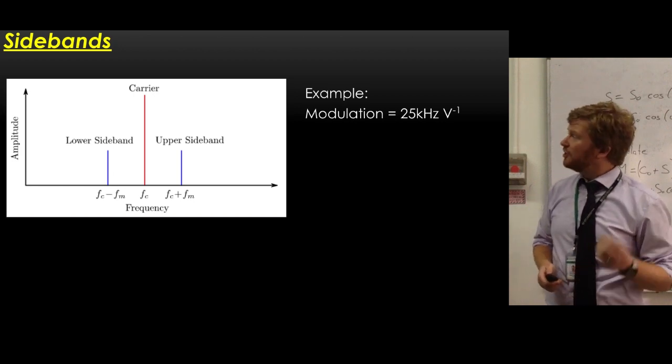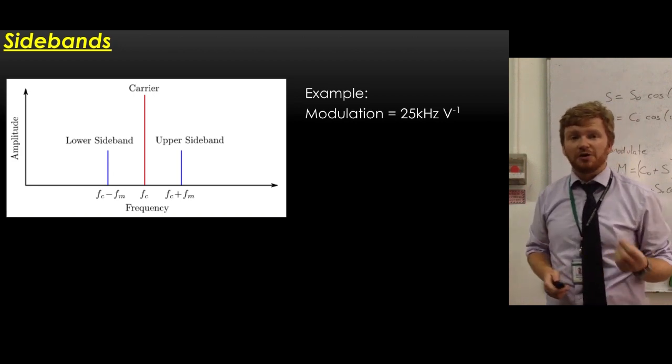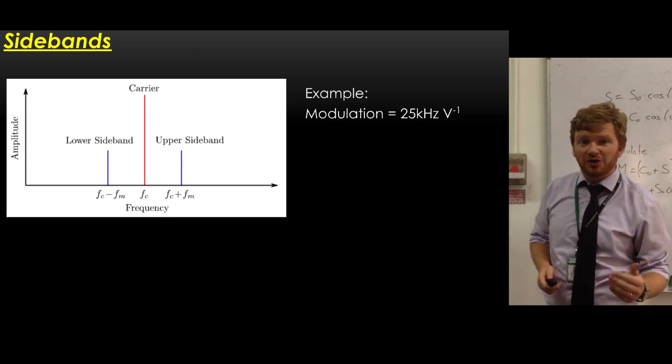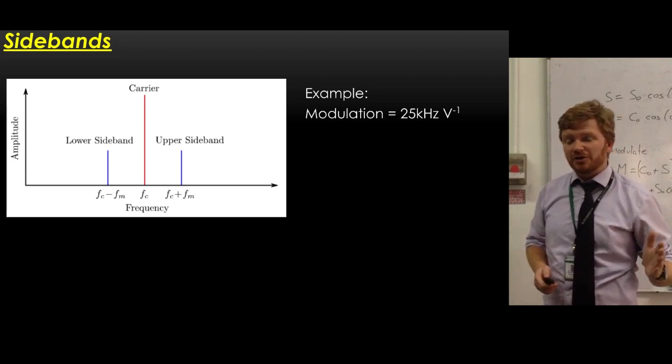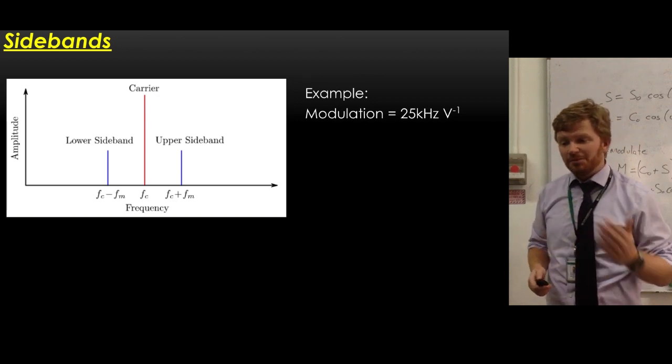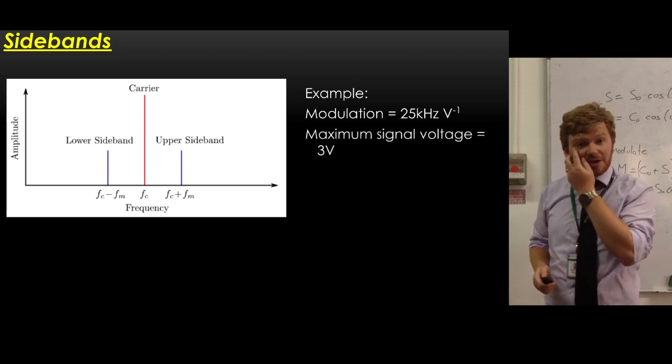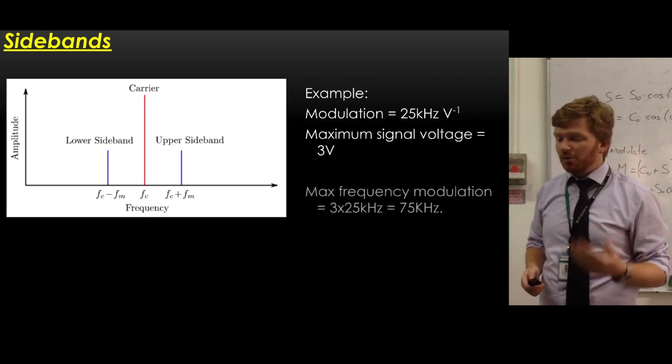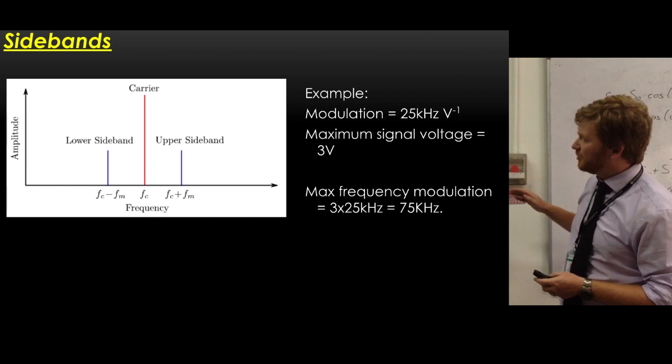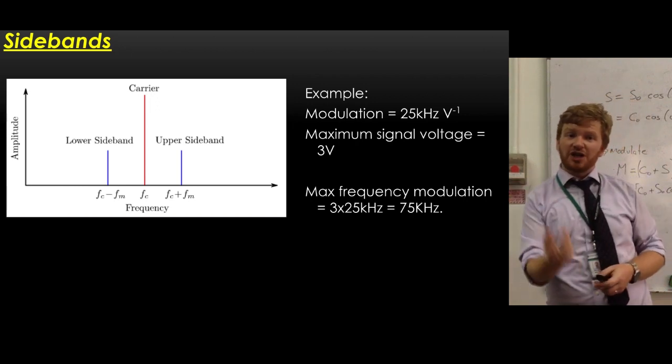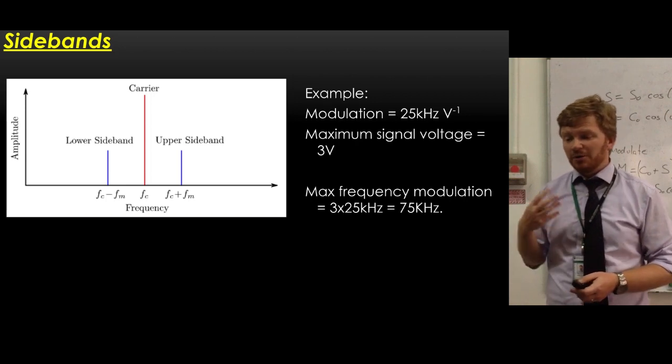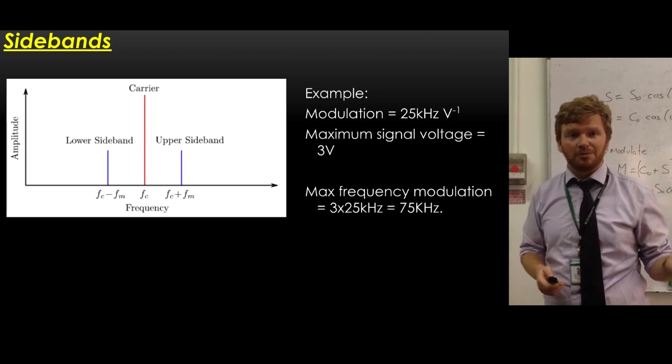Let's say I have modulation of 25 kilohertz per volt. That'd be pretty standard. So what that means is, for every volt of input signal, I'm going to shift my frequency by 25 kilohertz. Let's say as well that my maximum signal voltage is three volts. Well, what that means is that my maximum frequency modulation, the maximum that I can change my frequency by, will be three times 25 kilohertz, which gives me a 75 kilohertz modulation.